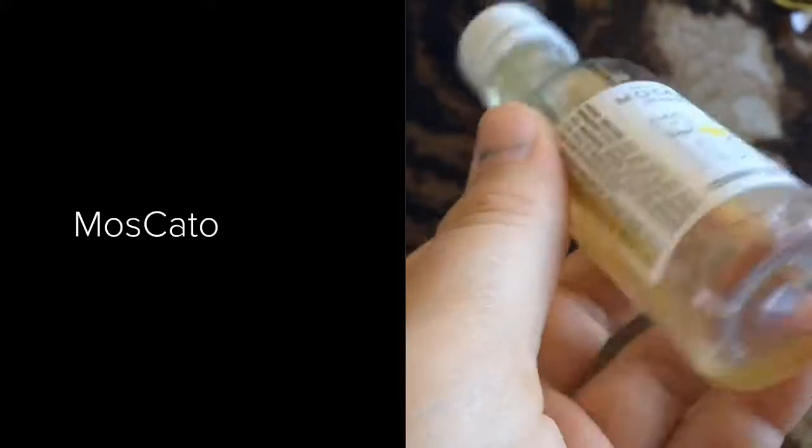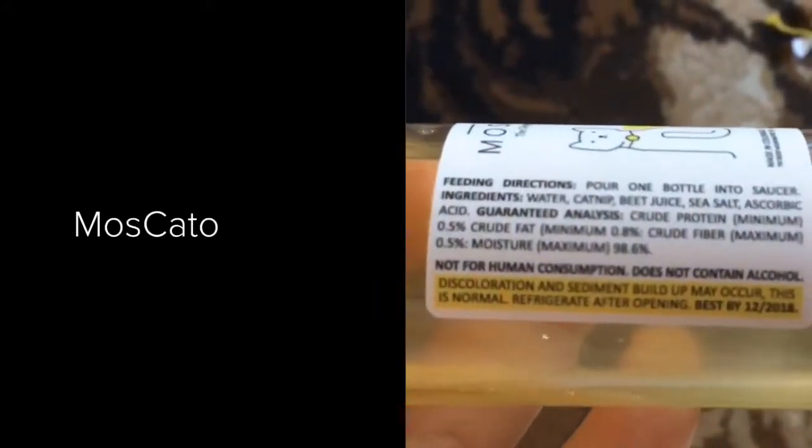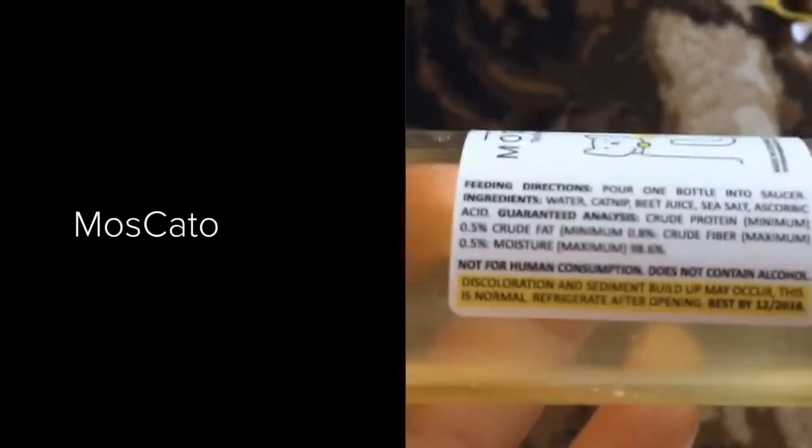Next is Meow Moscato. I think that's what it said. The ingredients are water, catnip, beet juice, sea salt, and ascorbic acid.